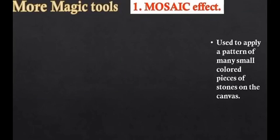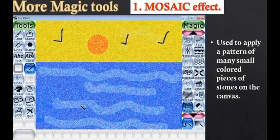The mosaic effect is used to apply a pattern of many small colored pieces of stones on the canvas. When you use this effect, it creates a pattern like small colored pieces of stones on the canvas.